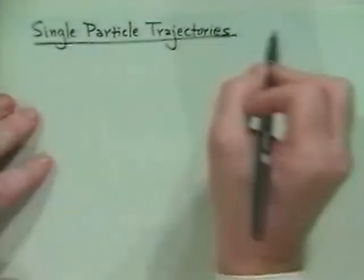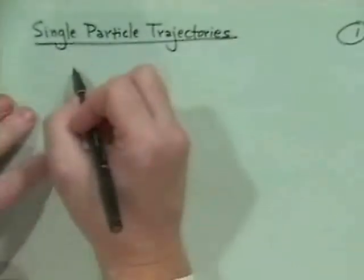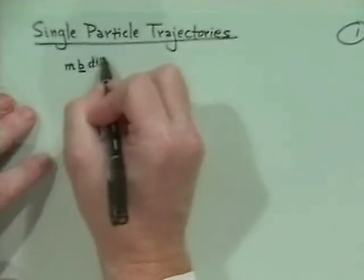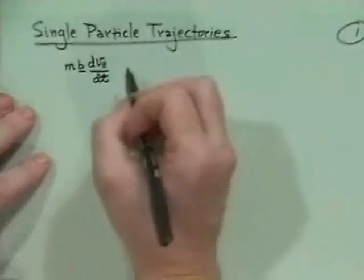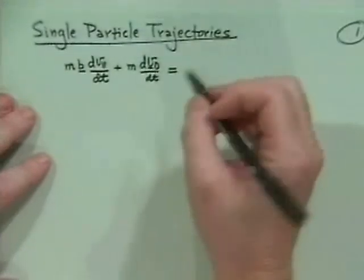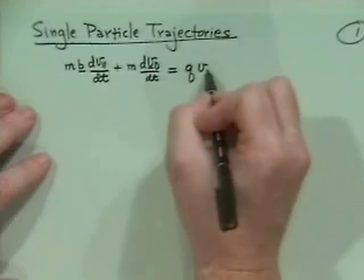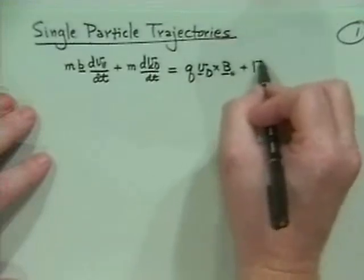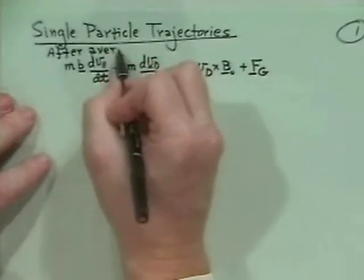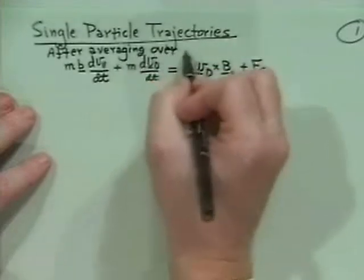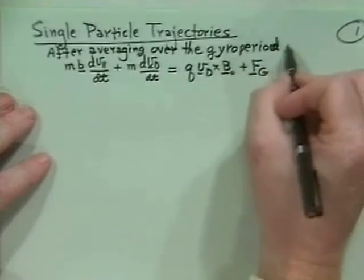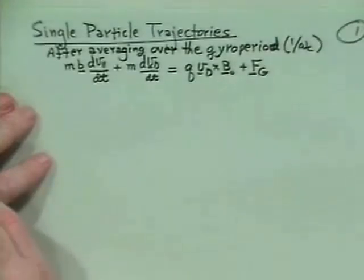We had basically derived an equation which governed that: the parallel motion, m dv_parallel/dt, plus the perpendicular motion, m dv_drift/dt, was equal to — this was after averaging over the gyro motion, in the small gyro radius limit, after averaging over the gyro period, which would be 2π over omega_c in time.